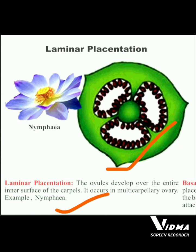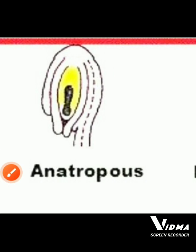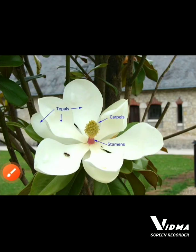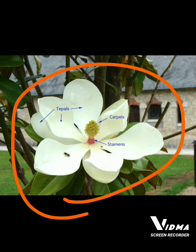This example is Nymphaea. This is the anatropous ovule type. This is the most primitive plant, as shown in this diagram — tepals and carpels and stamens are present on it.